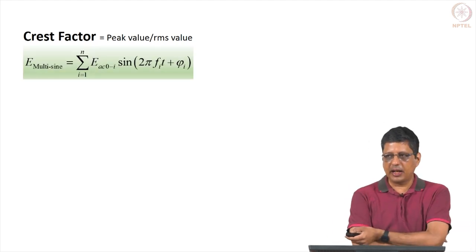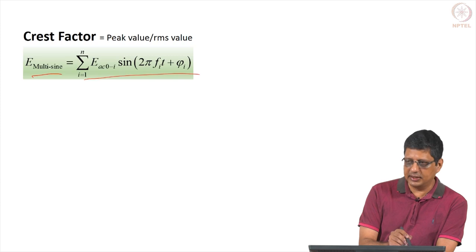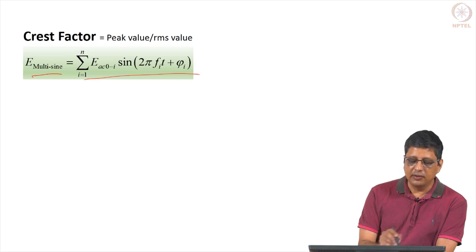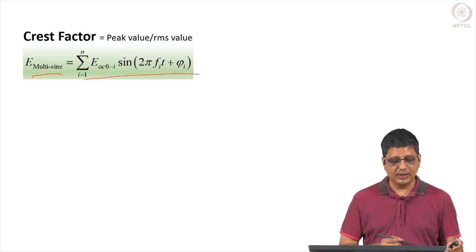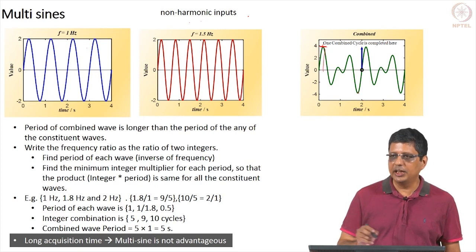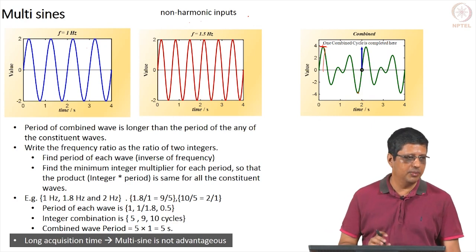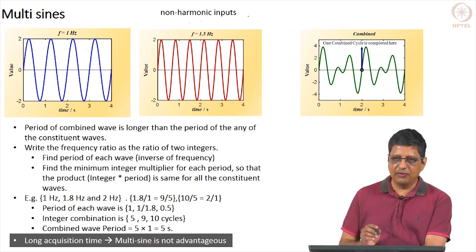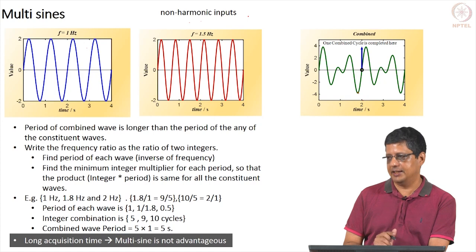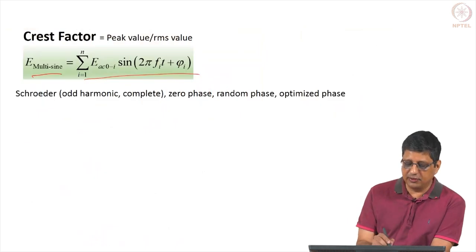There is another parameter called crest factor. This is a mathematical representation of adding different sine waves. Crest factor is the maximum of the combined wave divided by its RMS value. For a pure sine wave, maximum divided by RMS is √2. When you combine sine waves, maximum divided by RMS will be more than √2. You can optimize the crest factor by adjusting the phase — the RMS value will not change but the peak value can change.